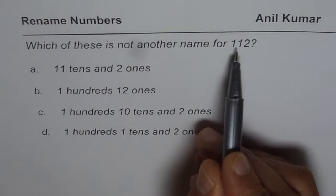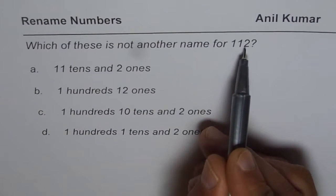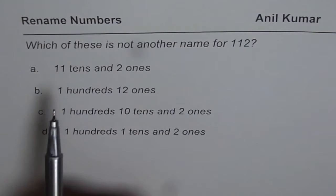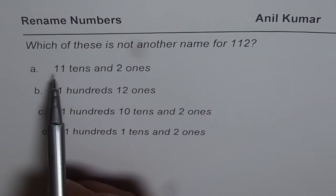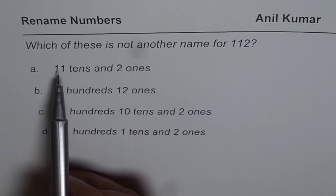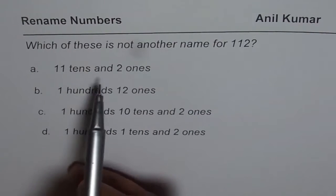Now, 112, 100, there's 110 and 2 ones in this. The descriptions are, first one is 11 tens and 2 ones.